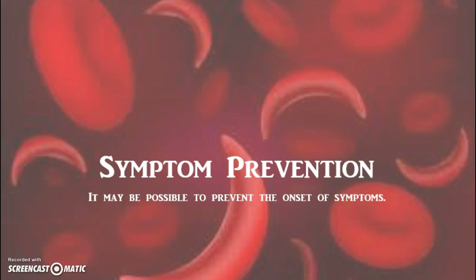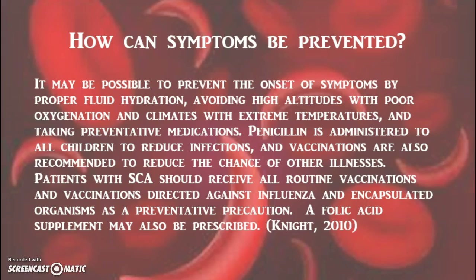It may be possible to prevent the onset of symptoms by proper fluid hydration, avoiding high altitudes with poor oxygenation and climates with extreme temperatures, and taking preventative medications such as penicillin in young children to reduce infections. Persons with sickle cell anemia should receive all routine vaccinations and even some not-so-routine ones like the flu and meningitis shots.